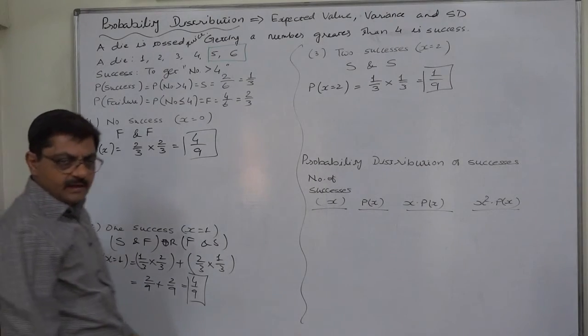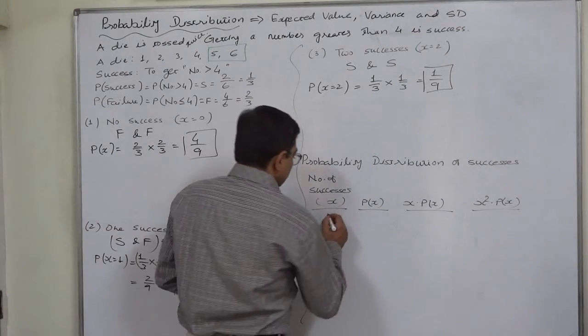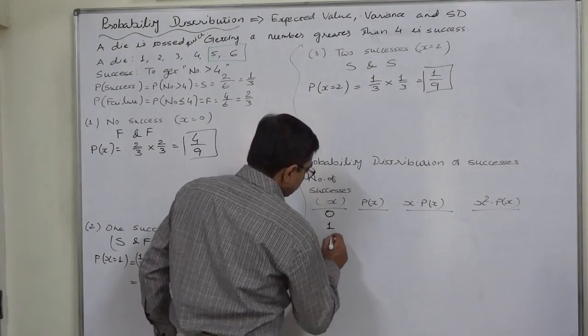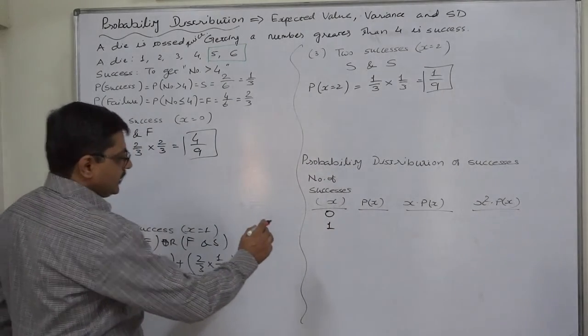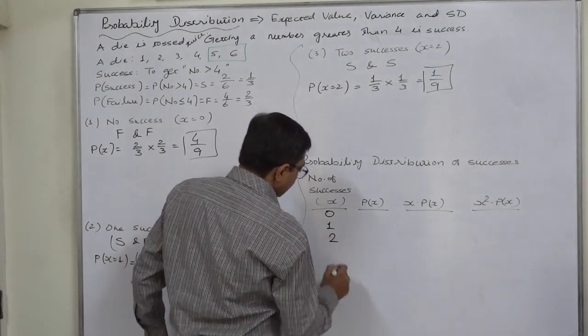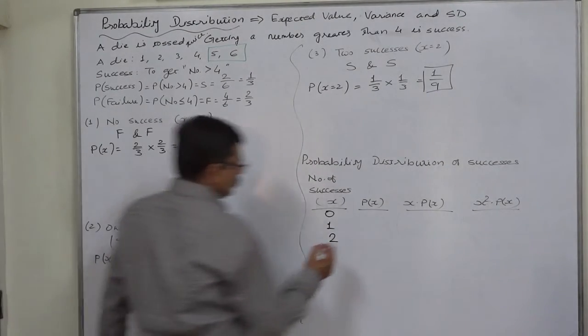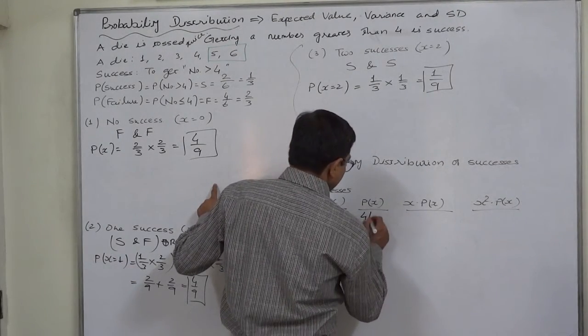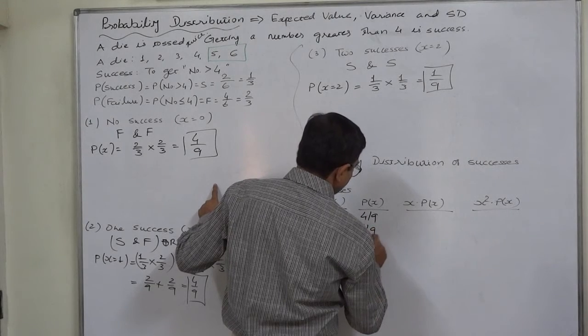Now the probability distribution: the random variable X to be defined as number of successes can take values 0, 1, or 2. Respective probabilities are 4 by 9, 4 by 9, and 1 by 9.